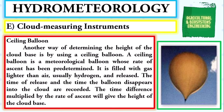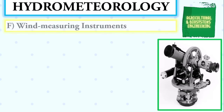Second, the ceiling balloon — another way of determining the height of the cloud base. A ceiling balloon is a meteorological balloon whose rate of ascent has been predetermined. It is filled with gas lighter than air, usually hydrogen, and released. The time of release and the time the balloon disappears into the cloud are recorded. The time difference multiplied by the rate of ascent gives the height of the cloud base.